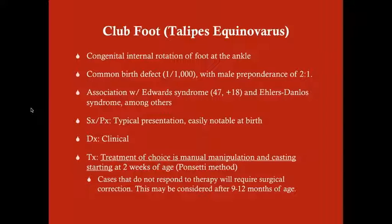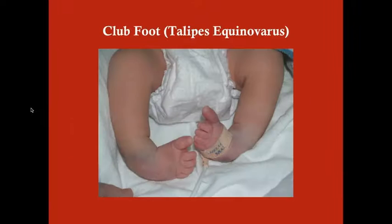Cases that don't respond to therapy, or where treatment was not started early, will require surgical correction. Surgery should not be considered until after nine to twelve months of age. The initial therapy of choice is manual manipulation and serial casting. Here are a couple of babies with club foot — you can see it's really obvious.